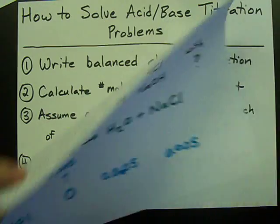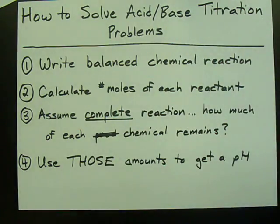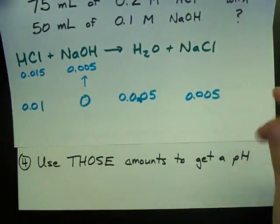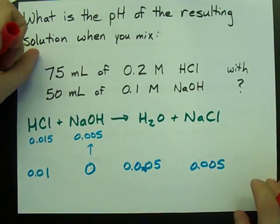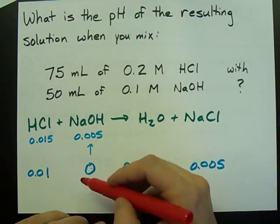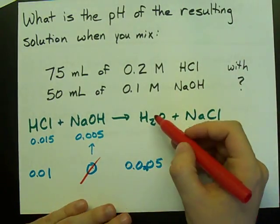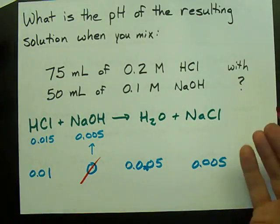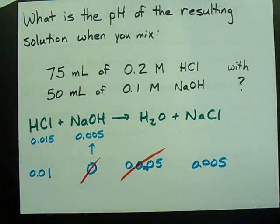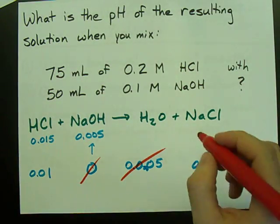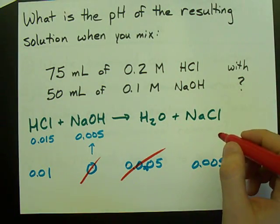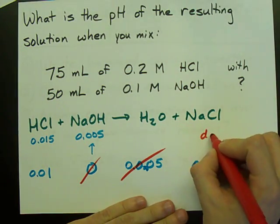Now that I've predicted how much of each chemical remains or was produced, I use those amounts to get the pH. All right, no NaOH. Don't have to worry about that in my calculation. Water doesn't affect pH at all, so I don't have to worry about that in my pH calculation. And NaCl also does not affect pH.